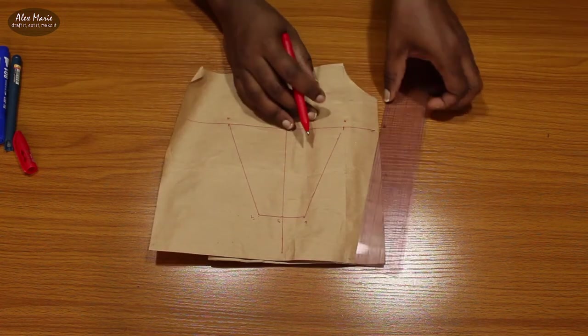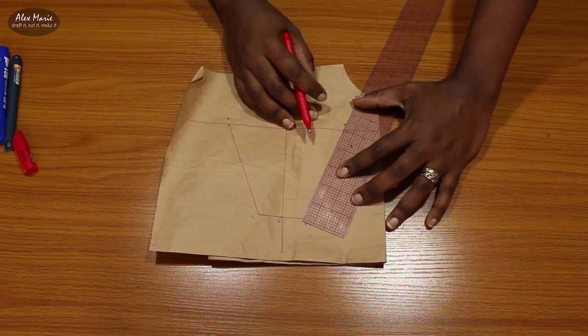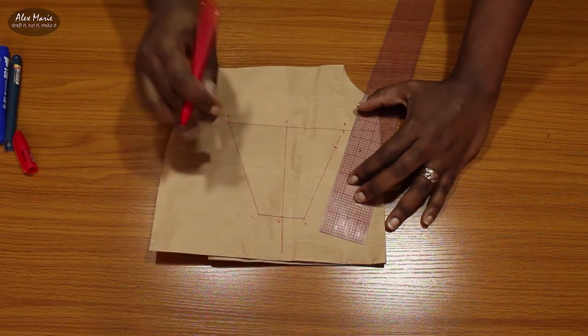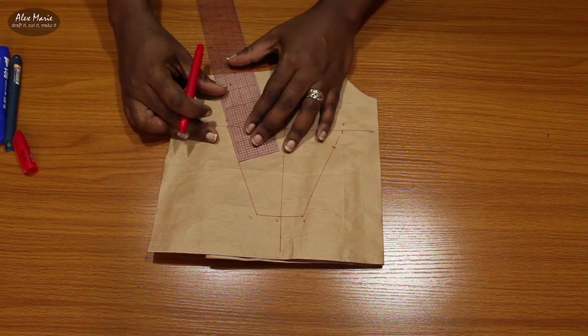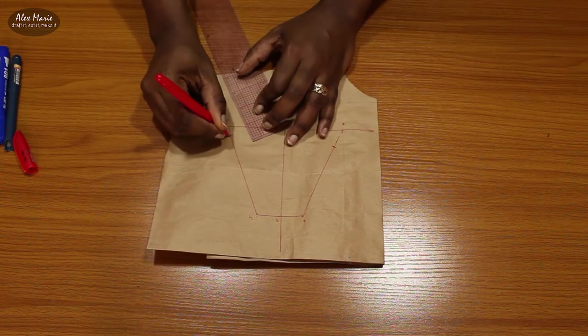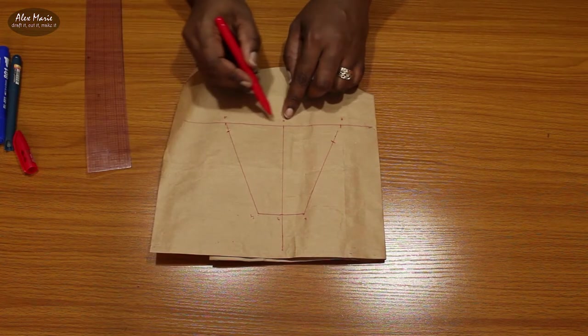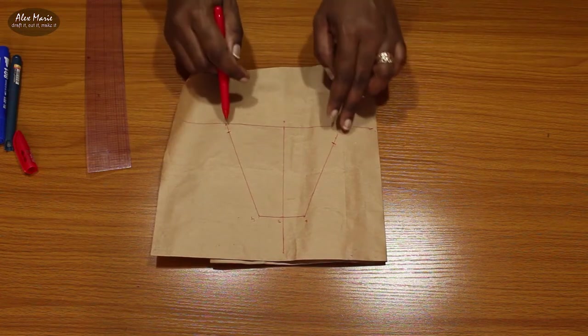From point A and B, measure inwards about an inch, about half an inch or five eighths of an inch. It's just to give a bit of shape. So I'll just do half an inch.